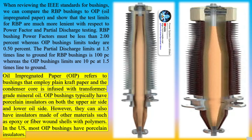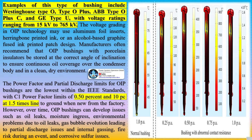When someone mentions a composite bushing in the industry, it is usually assumed that the bushing uses materials like resin, silicone polymers, or epoxy in the condenser body or the insulator. However, the actual definition of composite is a structure composed of different components — hence an oil impregnated condenser bushing with a porcelain insulator could also be classified as a composite bushing. Resin bonded paper (RBP) refers to a bushing composed of resin-coated plain kraft paper, used by Westinghouse on type S and OS bushings starting in 1941, from 15 kV to 69 kV.